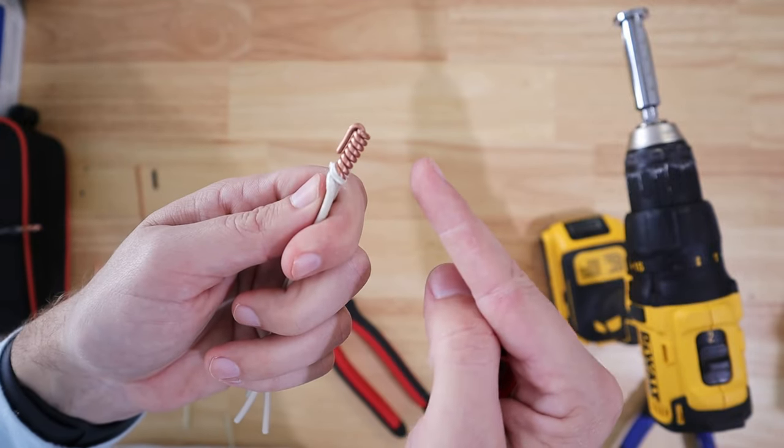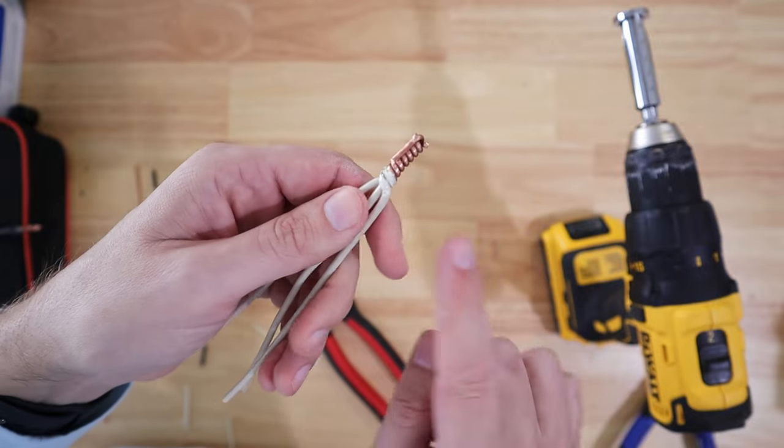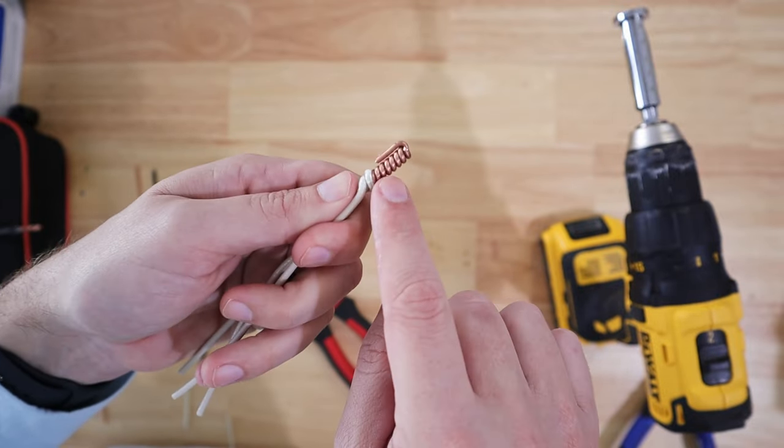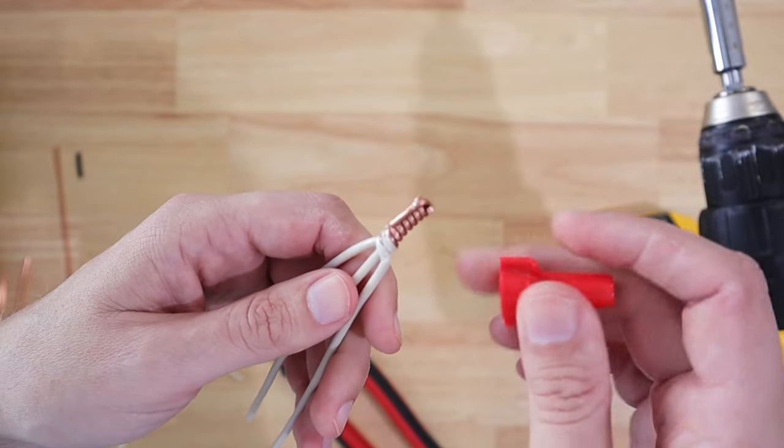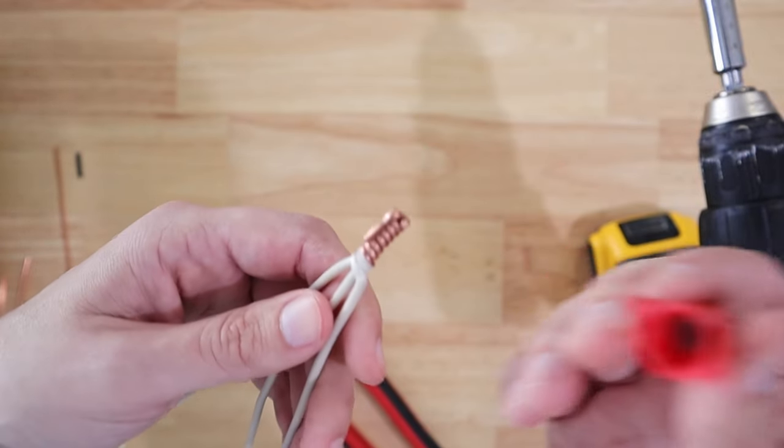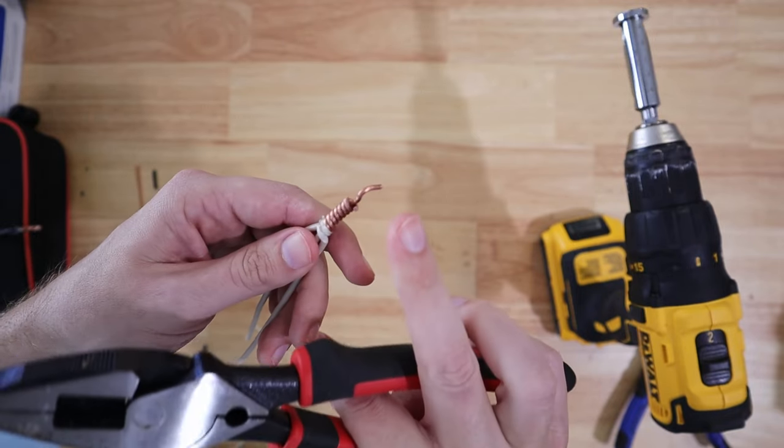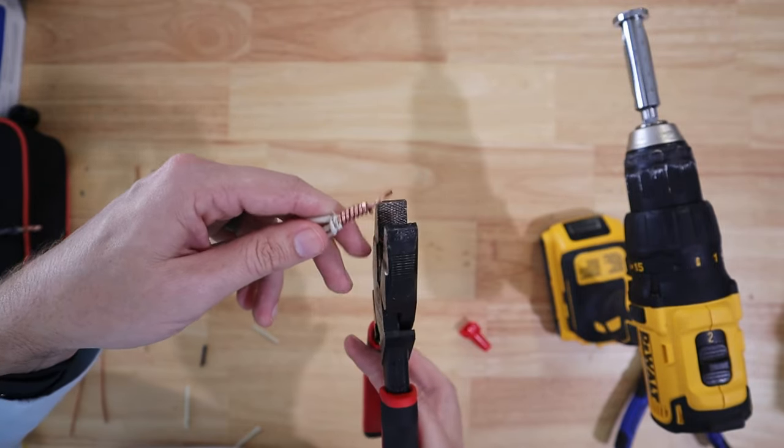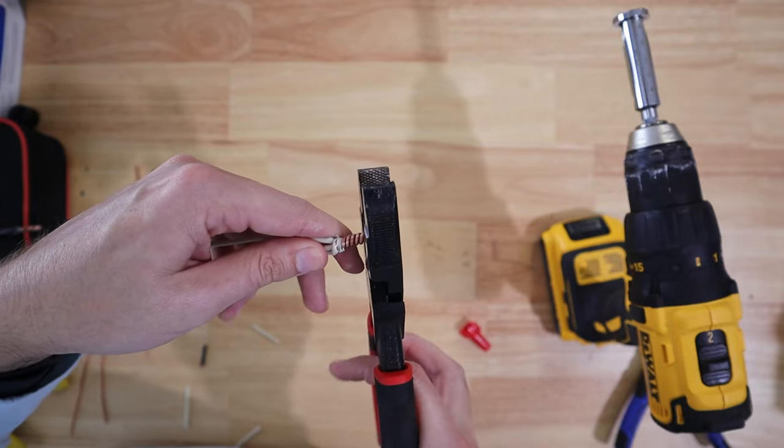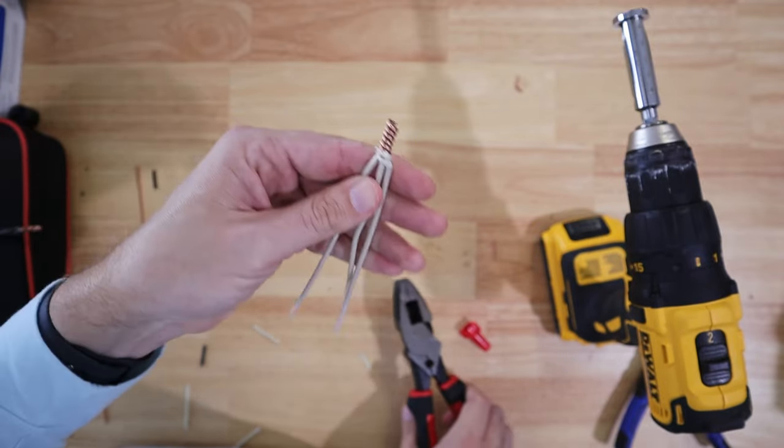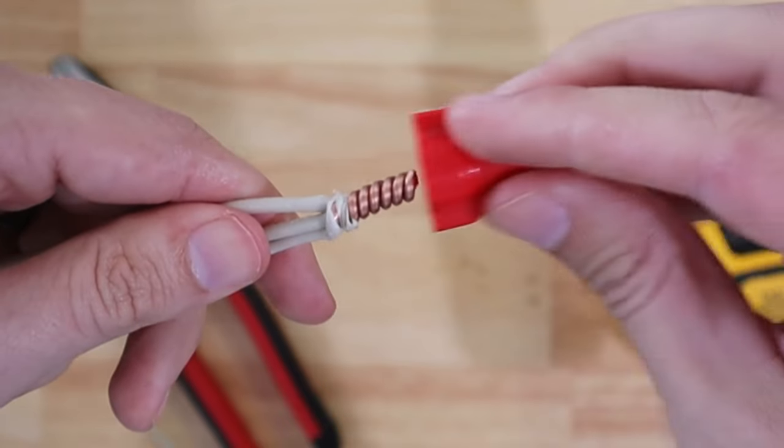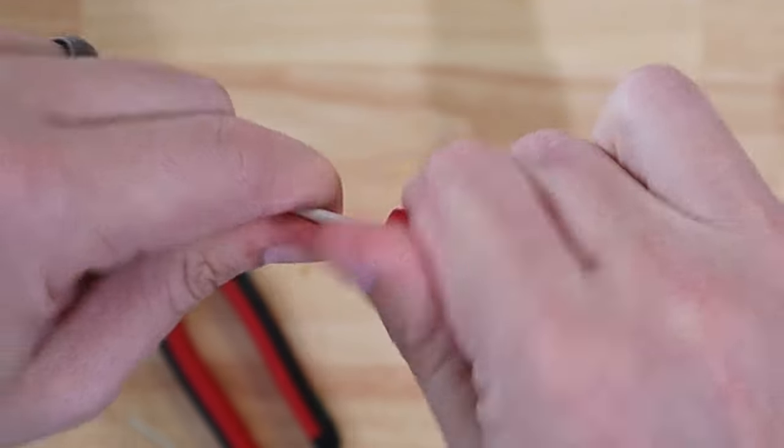I guess I'd be afraid that since it's not making a whole lot of contact that it would eventually just come off. So for me, if I was going to use this, I would leave that piece of metal all the way up and I would actually trim this all the way down like so and then take my wire nut and put it on top.